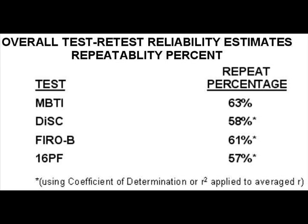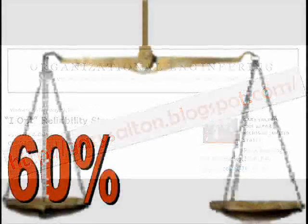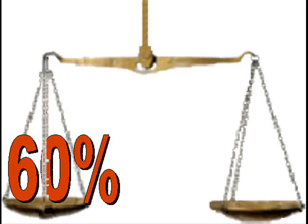Accepting these publisher-reported standards adds even more stress to the stress test — they are the highest numbers around. These publisher-reported reliabilities average to about 60% repeatability. Anyone interested is encouraged to link to this site for detail on where these numbers came from. The sources, links, and detailed methods of calculation are spelled out in this IOP research blog. In any event, the 60% standard will be used here.